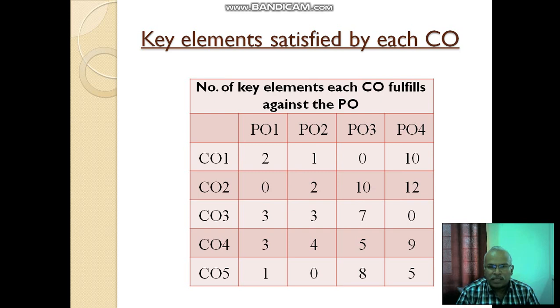Now, design an initial matrix like this. Course Outcome 1 contains PO1 with 2 elements and PO4, 10 elements. Similarly, Course Outcome 5 addresses key elements of PO1, 1, and PO4, 5. This is the initial matrix. How many key elements a particular course outcome is addressing? That is initial matrix.